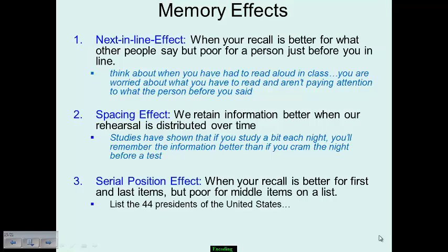Another scenario is the serial position effect. This is when your recall is better for the first and last items in a list, but not so good for the middle portions. For example, if I asked you to list the 44 presidents of the United States, it would be easy to remember George Washington, Thomas Jefferson, and John Adams, as well as more recent presidents like Bill Clinton, George H.W. Bush, George W. Bush, and Barack Obama. But presidents in the middle, like Millard Fillmore or James Polk, most of us wouldn't even remember learning about them. That's serial position effect.